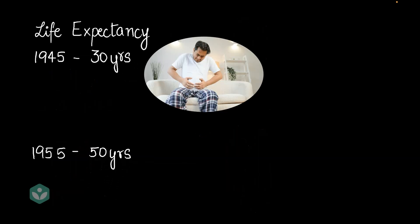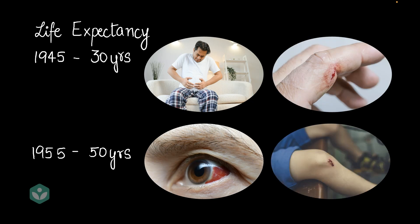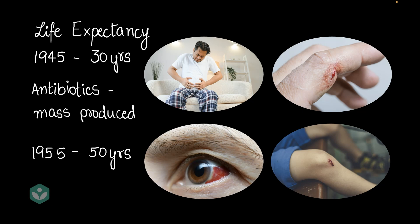Up until 1945, if someone had a stomach infection, an eye infection, a blister on their finger, or a scrape on their knee, there was a high chance they would lose their life to the infection because their immune system would not be able to fight it. But in 1945, antibiotics began to be mass produced, and that changed the course of medical history.